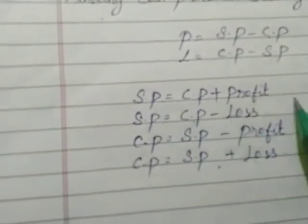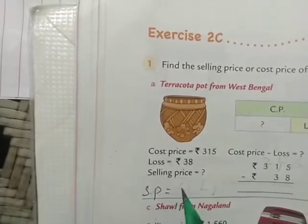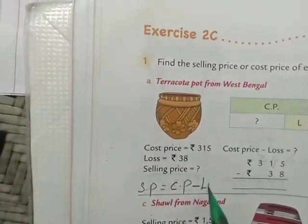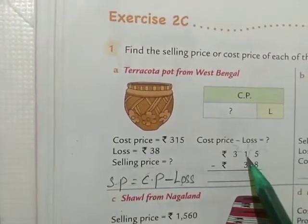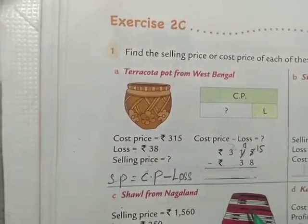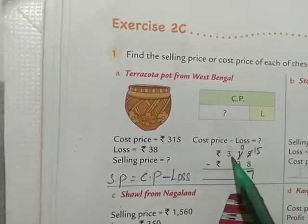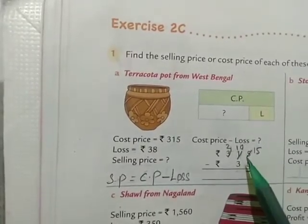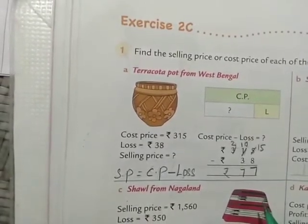Cost price with loss is given, they're asking selling price, so we are going to use the second formula. The formula is: selling price equals cost price minus loss. So 315 minus 38. 5 minus 8, we can't subtract, so we borrow from next — the 1 converts to 0, the 5 converts to 15. 15 minus 8 is 7. 0 minus 3, we can't subtract, so we borrow — the 3 converts to 2, the 0 converts to 10. 10 minus 3 is 7. So the selling price is rupees 277.